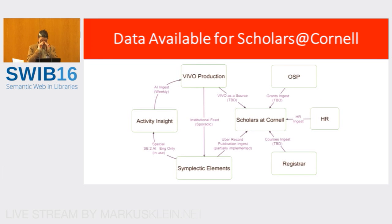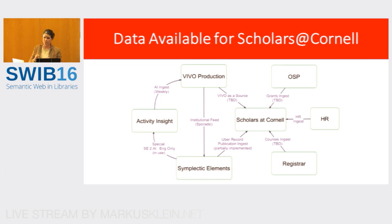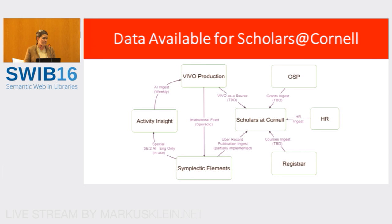Now, what data goes into this system? Scholars at Cornell pulls data from a couple of different sources. We have our existing Vivo production instance — a faculty profiling researcher system — and we're looking at whether we can pull and leverage data from that, clean it up, and make it usable. We're also pulling from OSP, the Office of Sponsored Research at Cornell University, which gives us all their grant data so we can pull that in and merge it into the system.